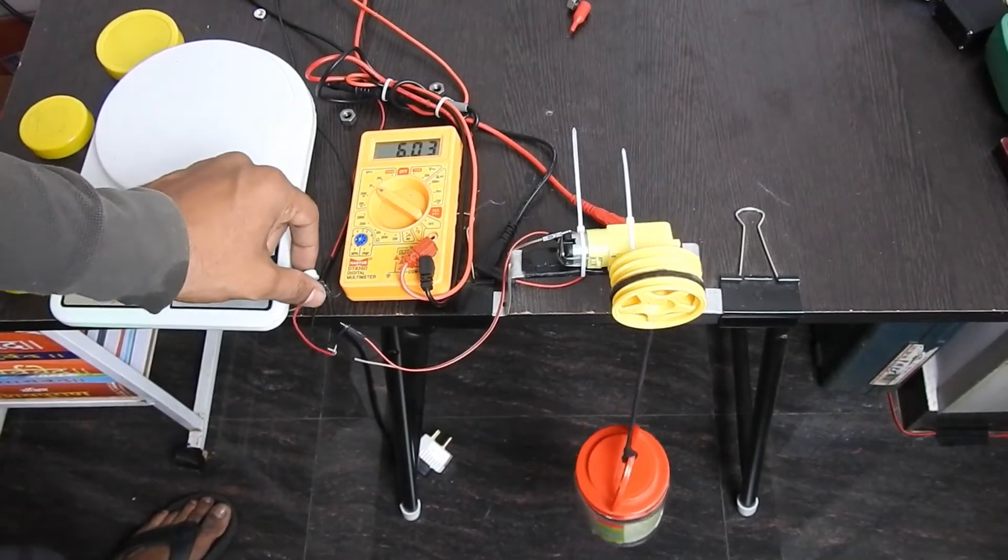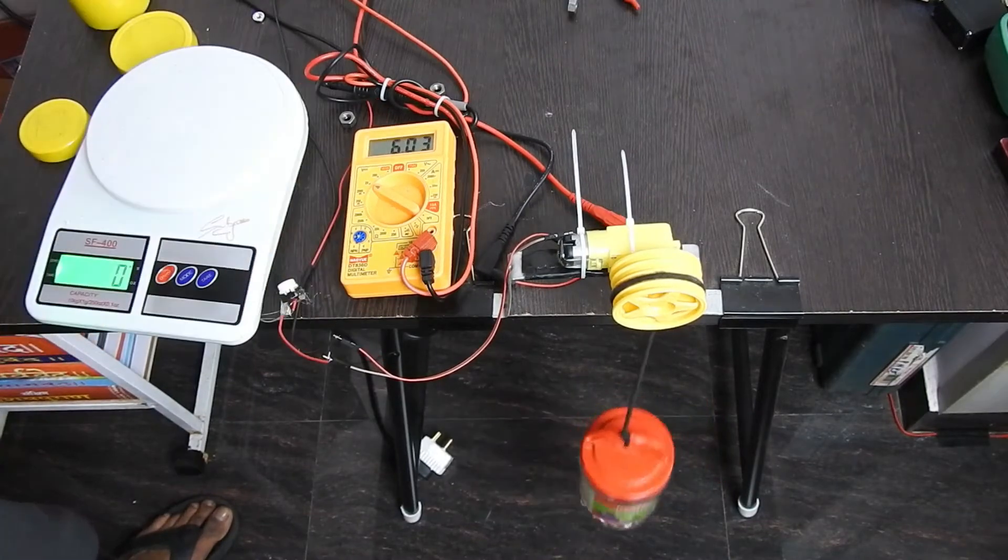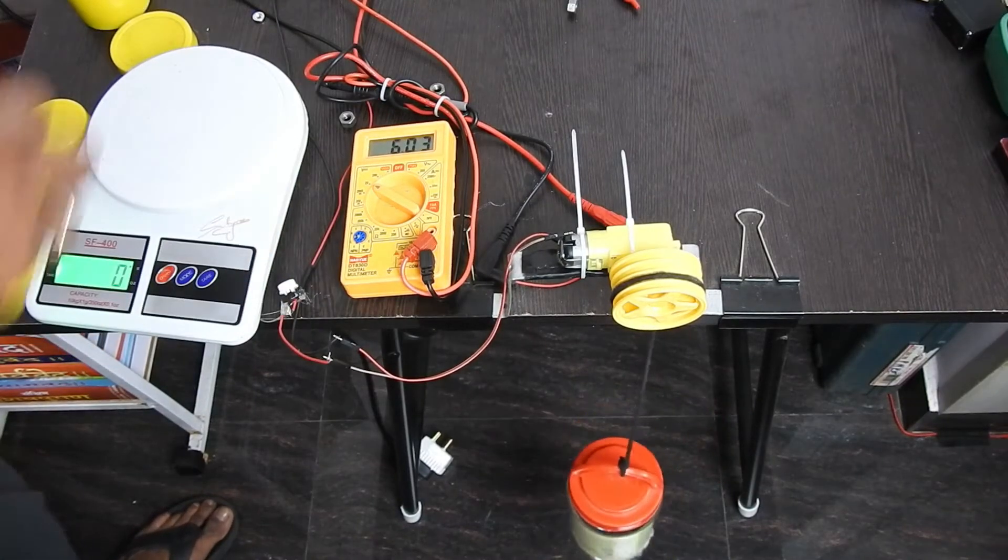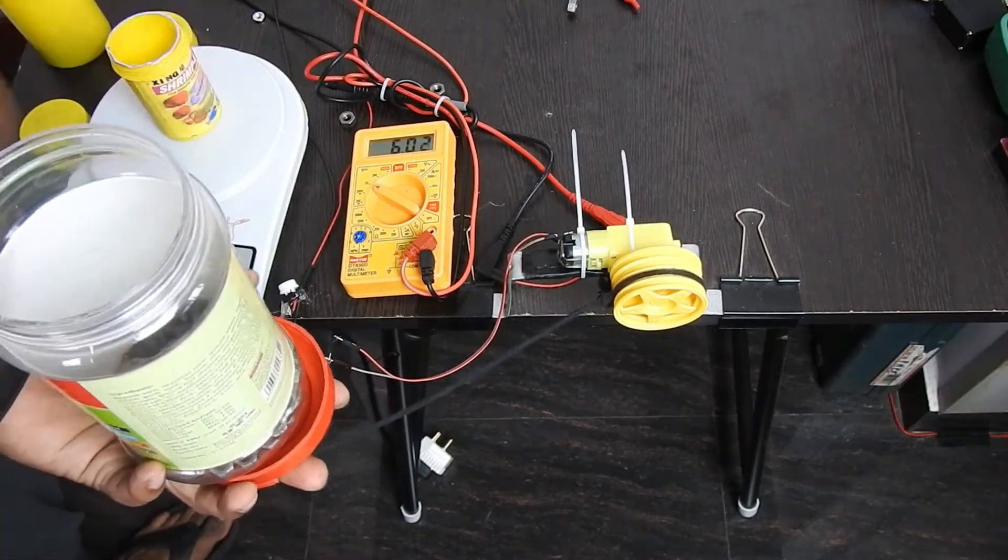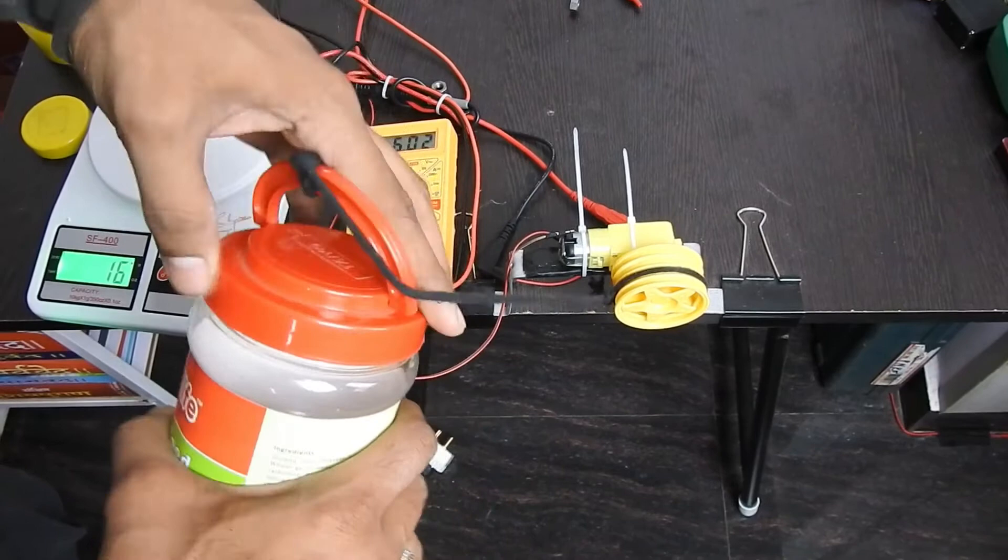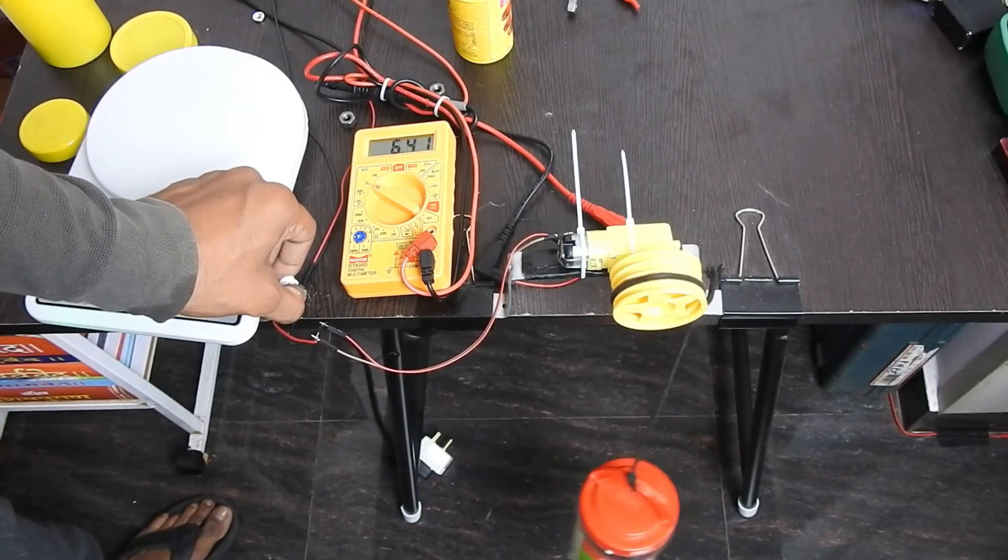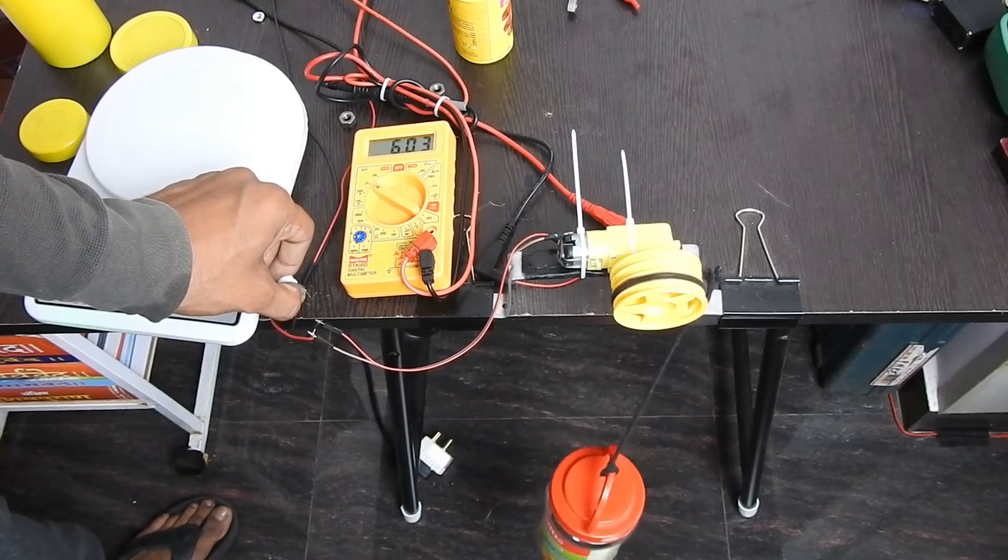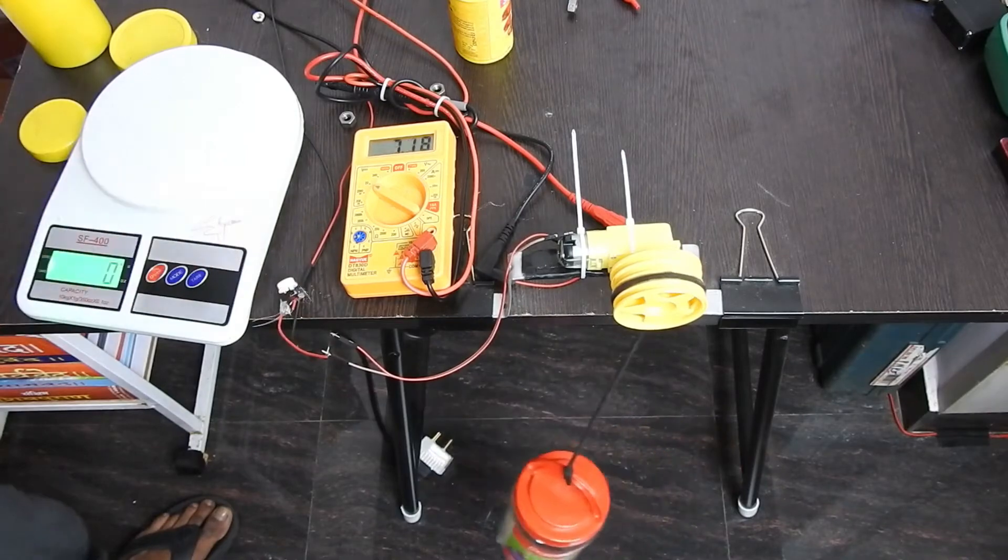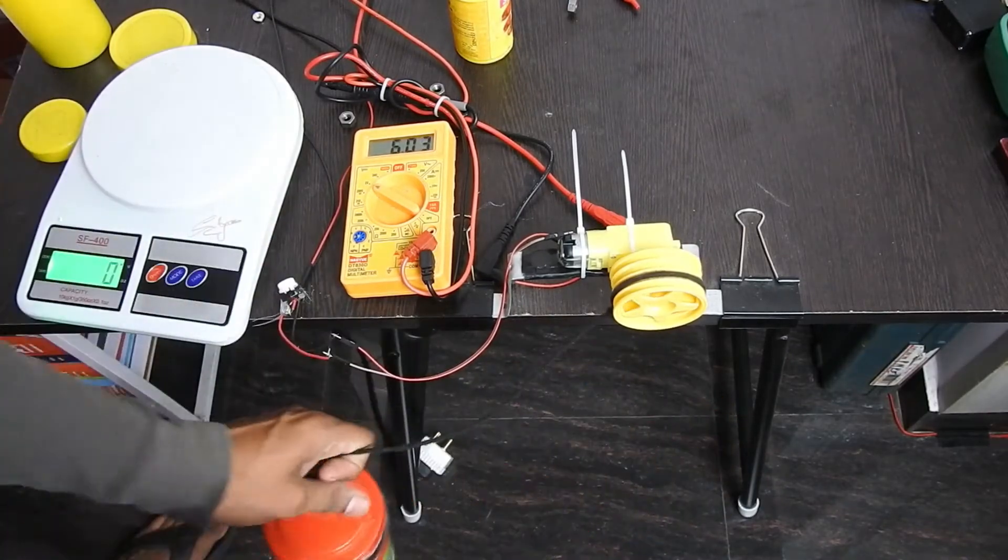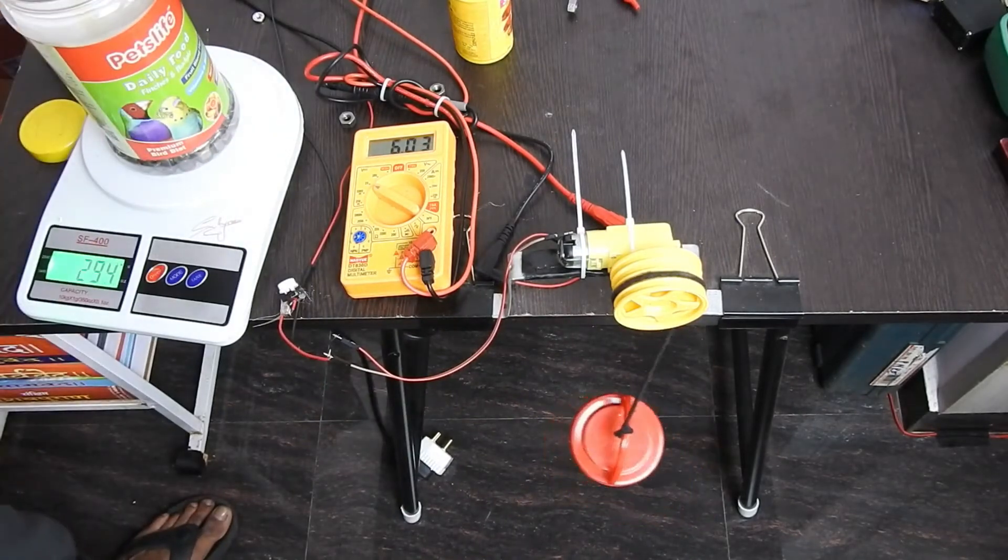We'll pump it up to 250 grams. Let's test. It could take it easily. I think we should try with 350. Let's test. It could almost take it, so this is the limit exactly. At voltage 6, we could take 294 grams at 0.5 meter distance.